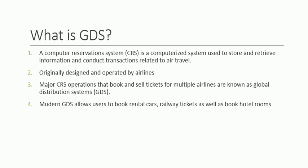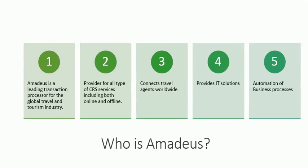The next concern is who is Amadeus and why they use the GDS system. Amadeus is a leading transaction processor for the Global Travel and Tourism Agency. They provide computer reservation services for all organizations or companies worldwide, for both online and offline. They also connect different travel agents worldwide and provide IT solutions to different organizations, and help with the automation of business processes worldwide.